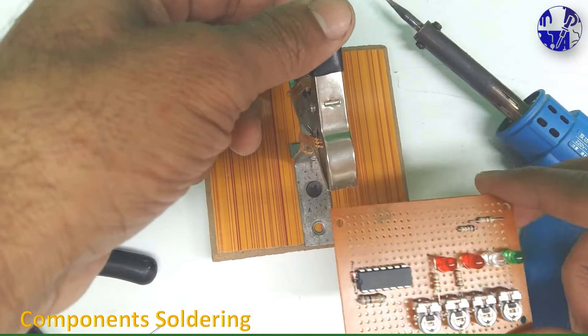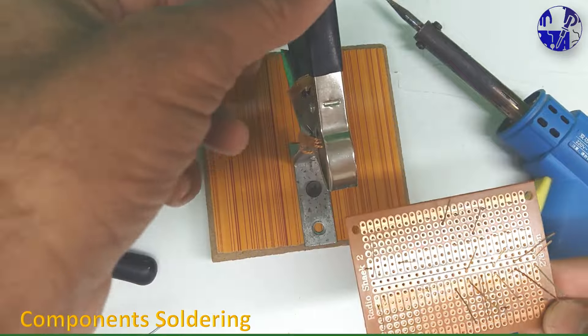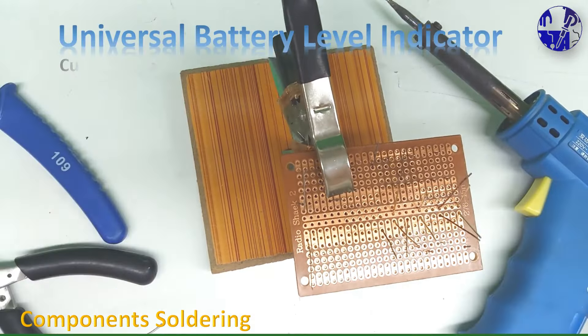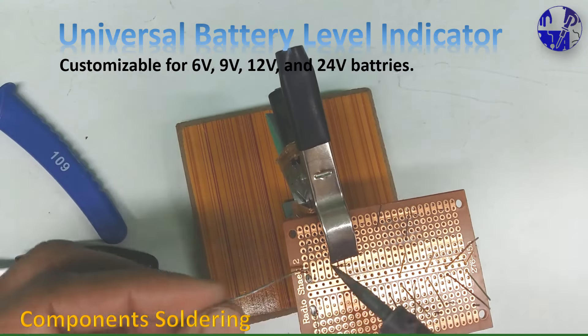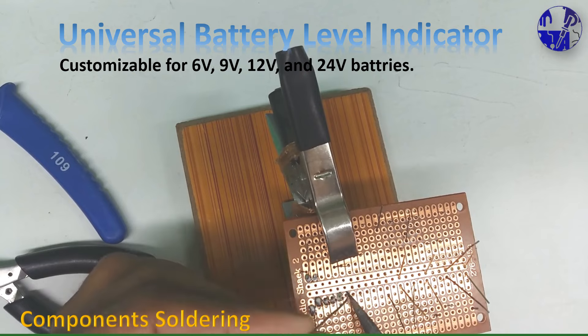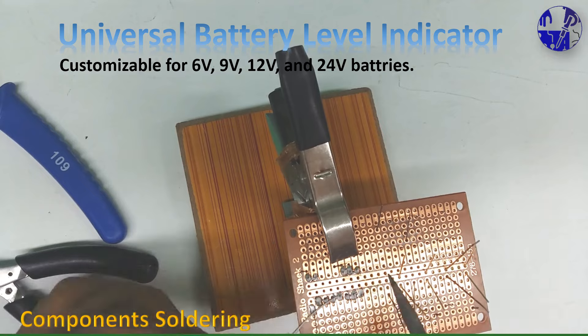After installing all the components on the vero board, it's now time to begin soldering them. Utilize this universal battery level indicator circuit for different types of batteries such as 6, 9, 12, and 24-volt batteries.